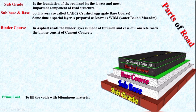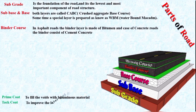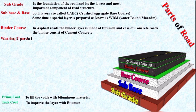Remember, in the case of a newly constructed road when compaction is not properly done, the binder course consists of different undulations on the top surface. We provide a tack coat to improve the layer with bitumen, and after that the wearing course is provided to avoid these undulations.